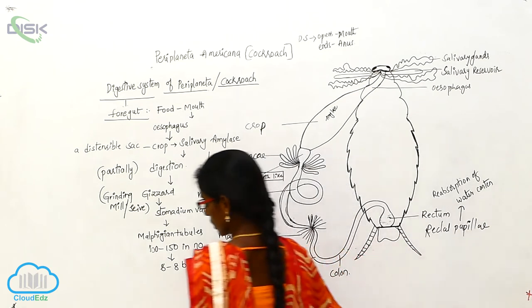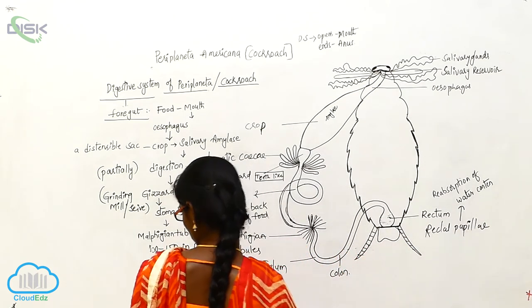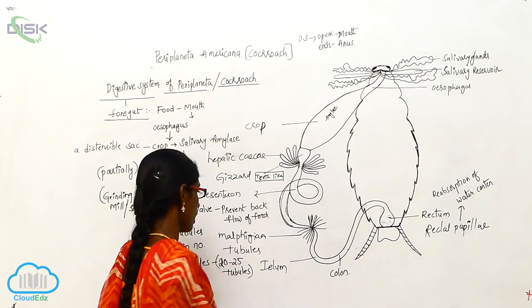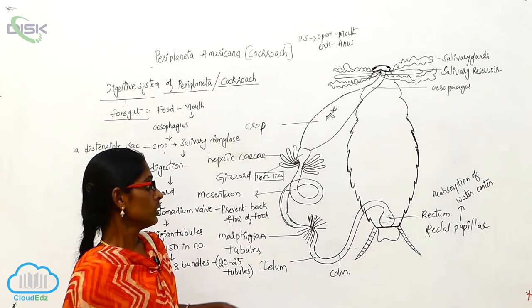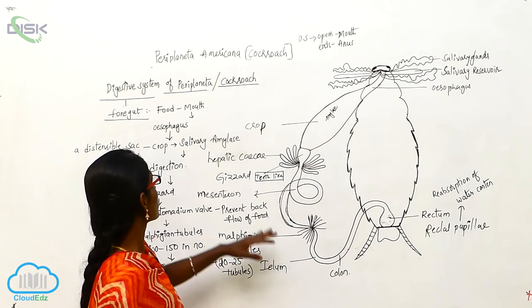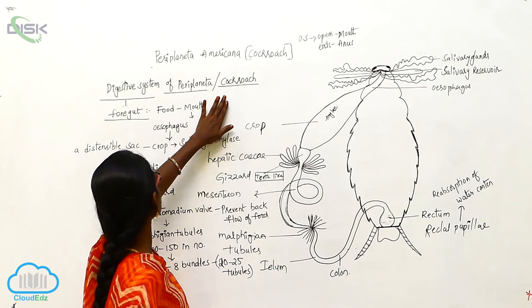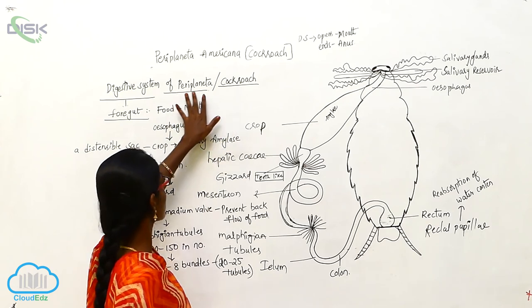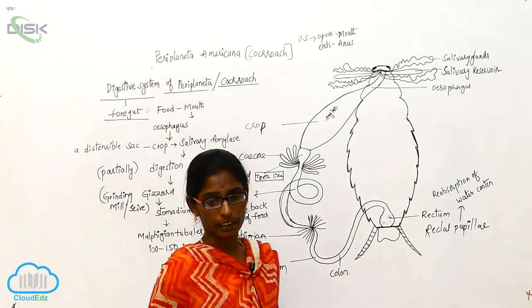The cockroach is a ureotelic organism. This is the digestive system of Periplaneta.